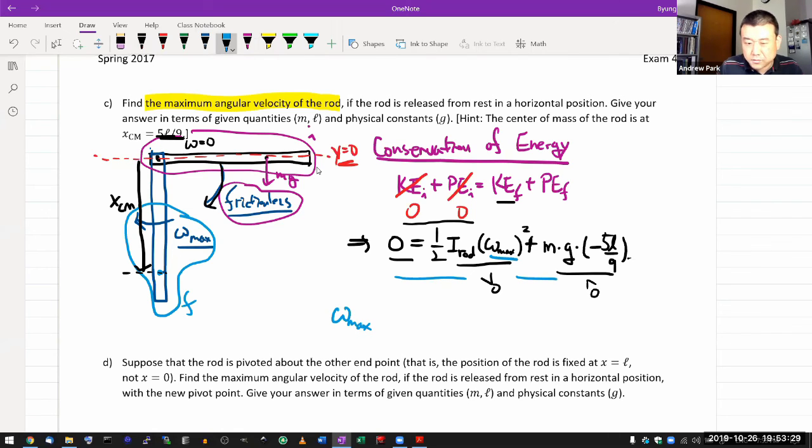And then you do that, this is what it ends up being. Omega max is equal to, well, let me just combine all those numerical factors. 10 over 9, MgL over I_rod, all things squared. If you know the expression for I_rod, then some of the things like M and L will cancel out. So that's part C.